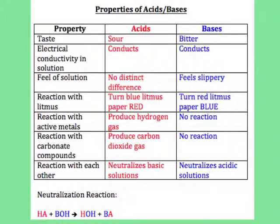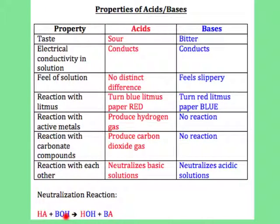When acids and bases react with each other, they neutralize each other. You can see a general reaction with a generic acid and a generic base: HA is a generic acid, and BOH is the generic base. The OH fits in with the Arrhenius definition, which we'll talk about in the next slide. The products are water and BA — which is a double displacement reaction as well as a neutralization reaction — forming a salt.